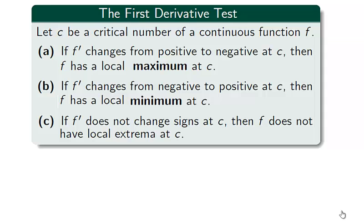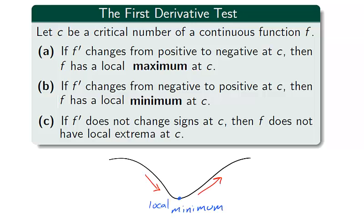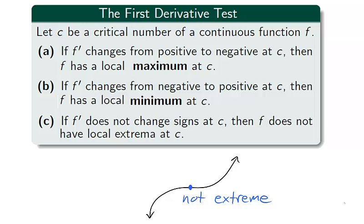The first derivative can also help identify local minimum and maximum points. The first derivative test says that at a critical point, if the values to the left have a positive derivative while the values to the right have a negative derivative, then the point is a local maximum — the function is increasing to the left and decreasing to the right. In the same way, at a critical point, if the values to the left have a negative derivative while the values to the right have a positive derivative, then the point is a local minimum — the function is decreasing to the left and increasing to the right. If at a critical point the derivative does not change signs, then the point is not a local extremum.